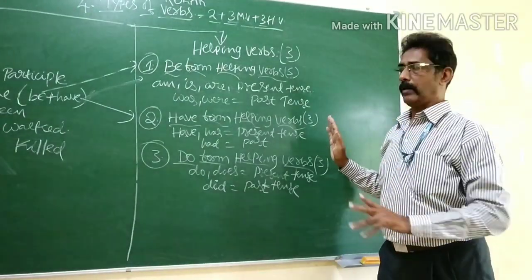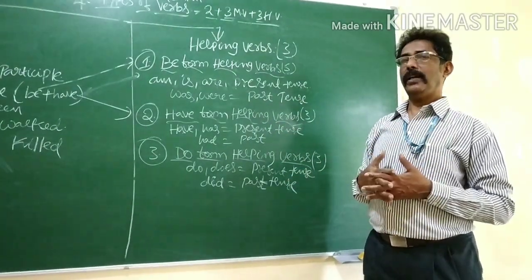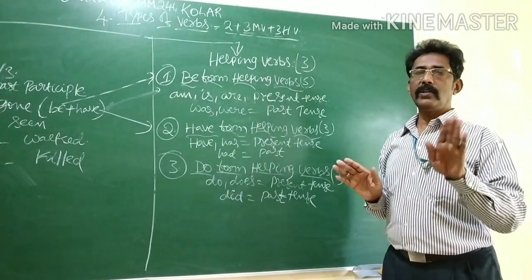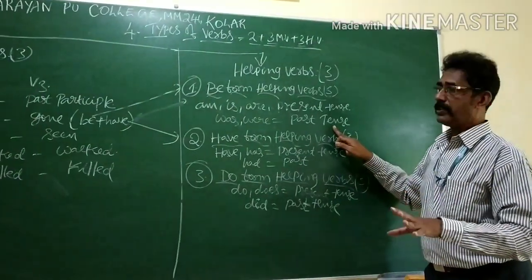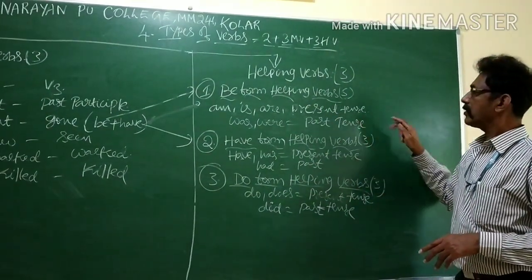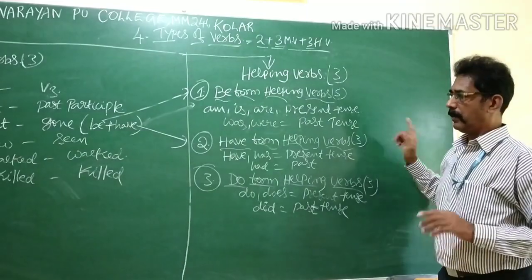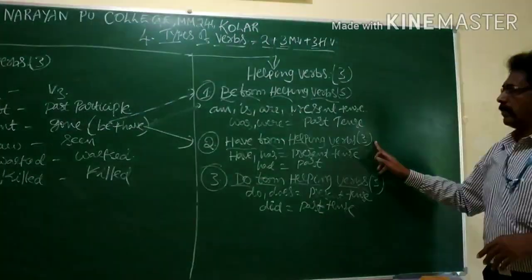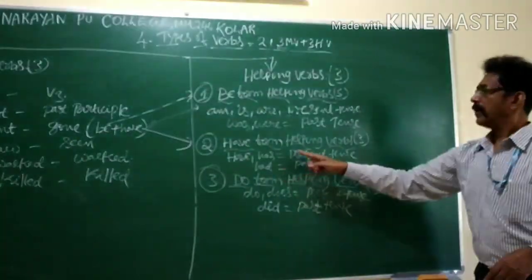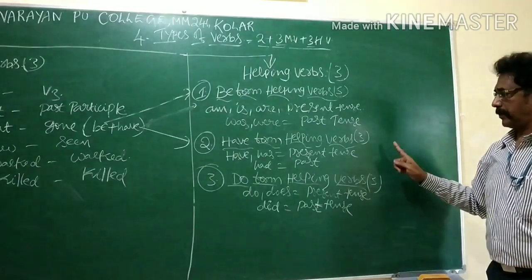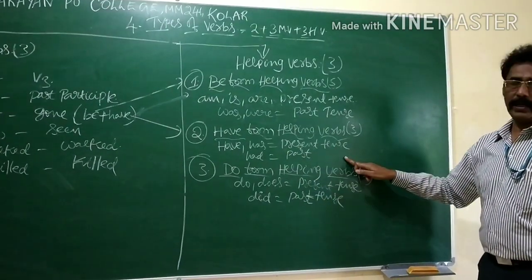Have-form helping words: have, has — present tense helping words. Had — have-form past tense helping words. Once more: have, has — present tense; had — past tense. Do-form helping words: do, does — present tense, do-form helping words. Did — do-form past tense helping words. That's all. If you like this one, you must note down all these words in your notebook.